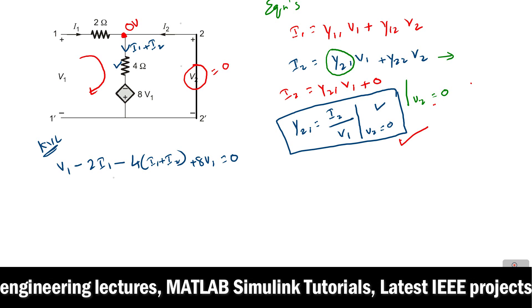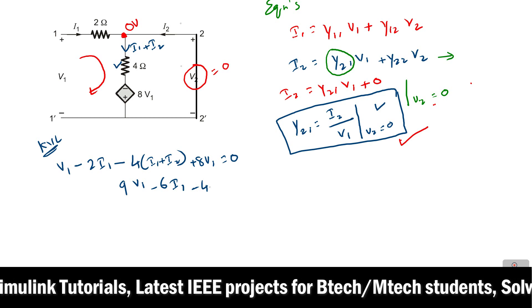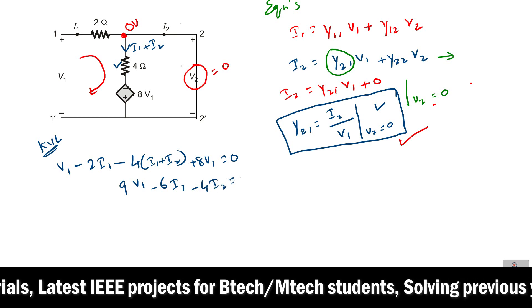Now you can just simplify this, then you will get 9v1 minus 6i1 minus 4i2 equals 0.